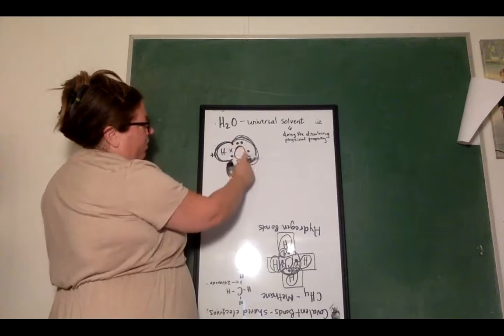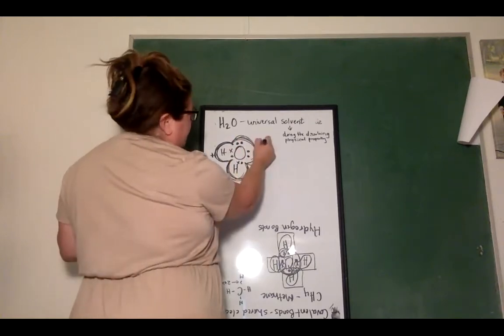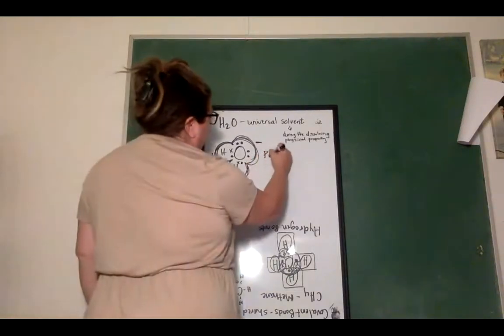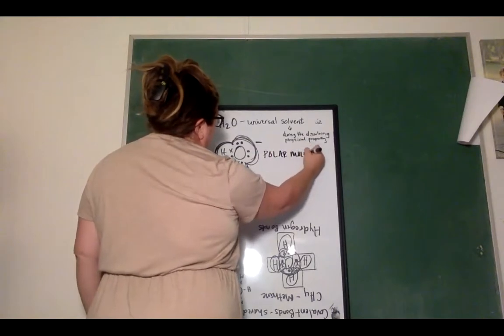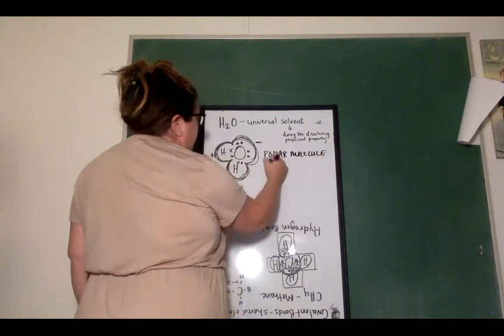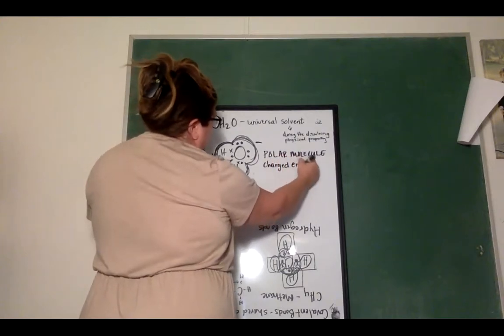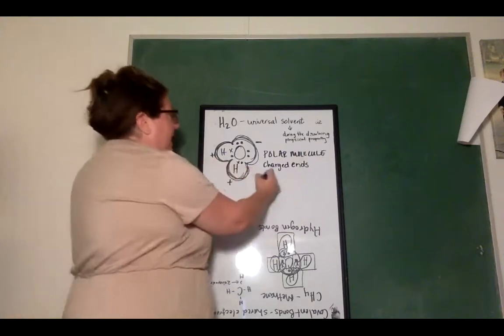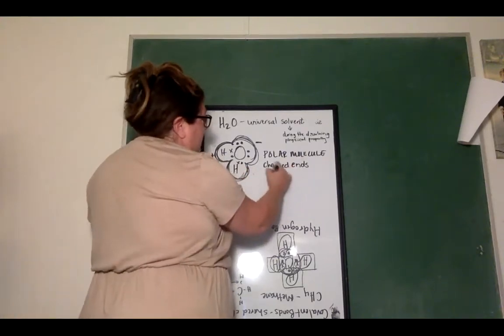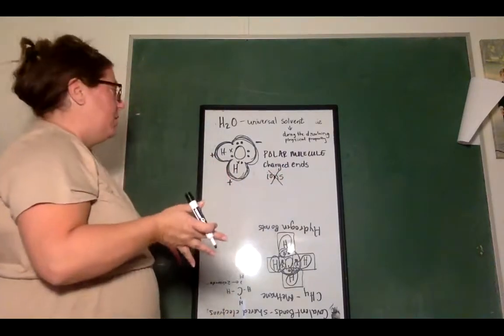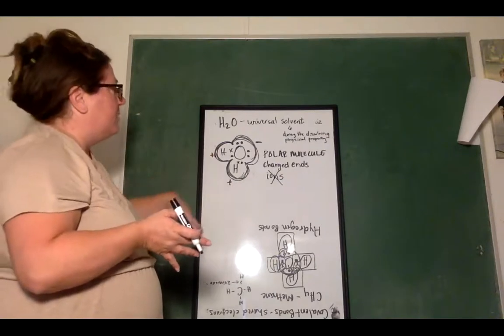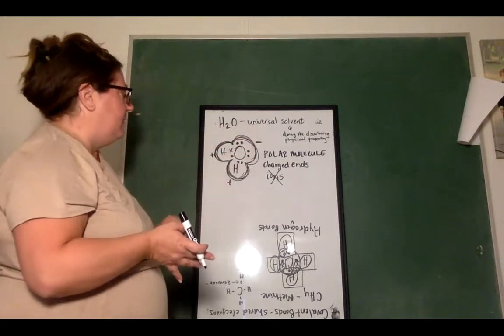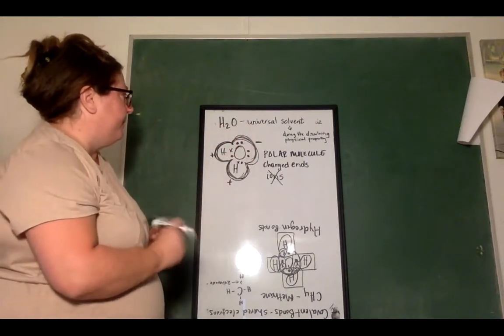So this makes this side have a negative charge, and we call this a polar molecule, because it has charged ends. The way that it is shaped, it's not an ion, it's not made from ions. It's not made from ions that have a charge. It's just the way that it's shaped causes it to have charged ends, a positive end and a negative end.